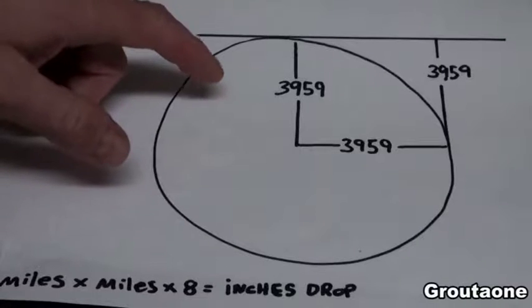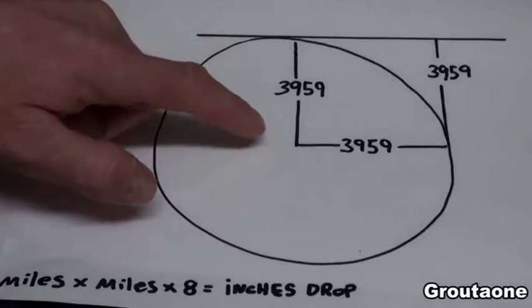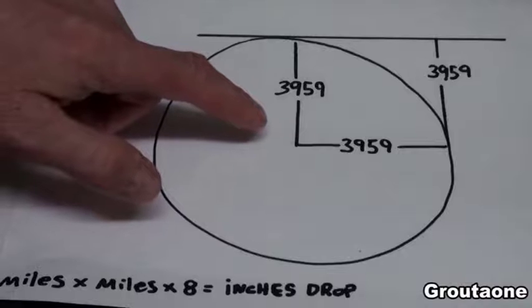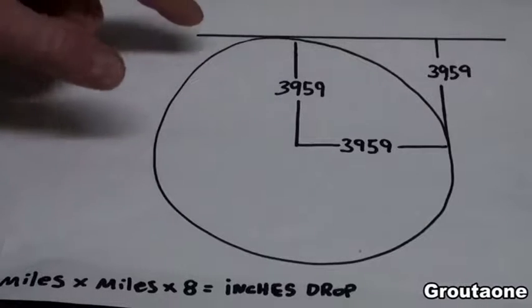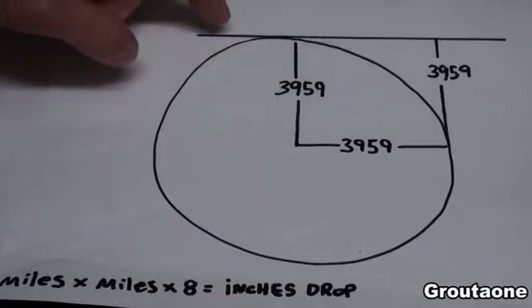If I take a sphere with a radius of 3,959 miles and put a straight tangent line along the top, that's an imaginary line that I would measure down from.